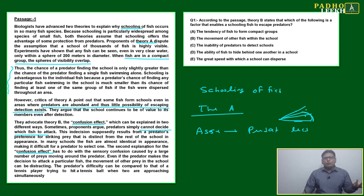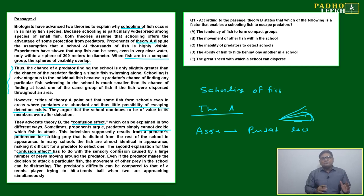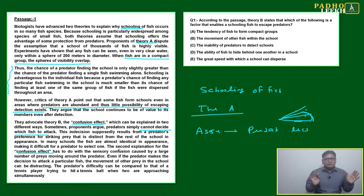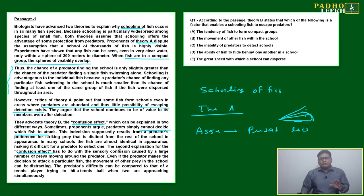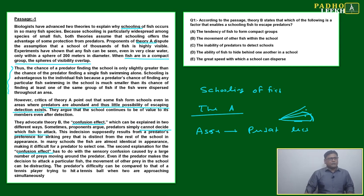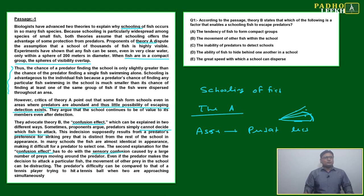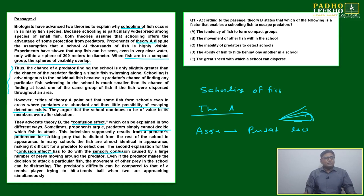Theory B is telling that when fish are in a group, the predator will get confused about which fish is moving in which direction, because many similar fish are continuously moving. They will be totally perplexed — confused about which fish to attack at a particular point of time. Sensory confusion is caused by a large number of prey moving around the predator. Even if the predator makes a decision to attack a particular fish, the movement of other prey in the school can be distracting.